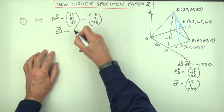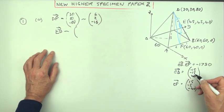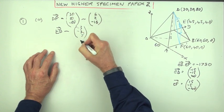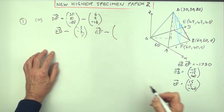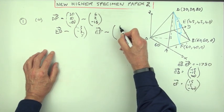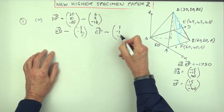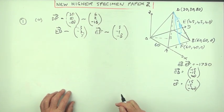Similarly, ED would be equivalent to negative 3, negative 3, 8. And EF would be equivalent to 3, negative 1, negative 8.